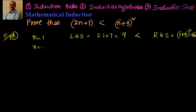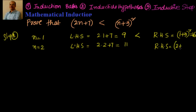We want to check for one more value. LHS is equal to 2 into 2 plus 7, that is 11, and RHS is equal to n plus 3 whole square, that is 2 plus 3 whole square, that is equal to 25. Also we know that 11 is less than 25. We know 9 is less than 16 and also 11 is less than 25, so first step is done.